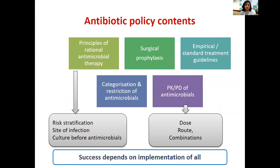There are gaps between evidence and practice because we often don't target the barriers and enablers critical for successful implementation — meaning we sometimes lack an implicit implementation strategy. The question is: how do we make our antibiotic policy implementation effective? An antibiotic policy needs to cover rational antimicrobial therapy, risk stratification, site of infection, surgical prophylaxis, standard treatment guidelines, and restriction of antimicrobials along with their PK/PD.